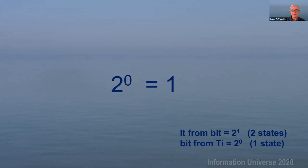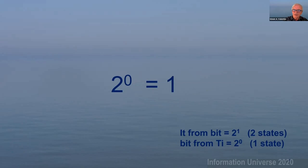This is simply a consequence of following the powers of two. If two to the power one is a bit, then we can identify it with a bit. A bit has two states. Then we have 'it from bit,' which is the usual statement we make about the information universe. But a bit should also come from something — bit from T. This is how we present it in the book: T being the space-time form, two to the power zero, the eternal space-time form. This solves the riddle Charlie Lineweaver also addressed — 'it from bit,' what is the reverse? Where does bit come from? Bit comes from T, the space-time form. That's the approach, and it is simply a consequence of following the powers of two.